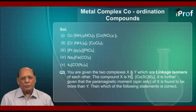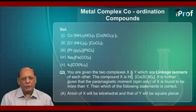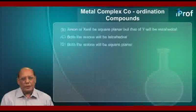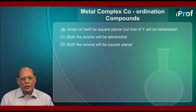Then, which of the following statements is correct? Option A: the anion of X will be tetrahedral and that of Y will be square planar. Option B: the anion of X will be square planar but that of Y will be tetrahedral. Option C: both anions will be tetrahedral. Option D: both anions will be square planar.